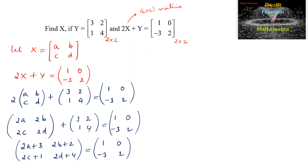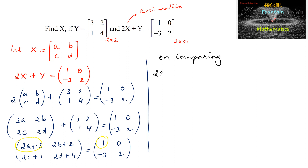Since we know that two matrices are said to be equal if their order is the same and their corresponding elements are equal, we can take 2A plus 3 is equal to 1. Comparing elements: 2A plus 3 equals 1, which implies 2A equals 1 minus 3, that is 2A equals negative 2, so A equals negative 1.